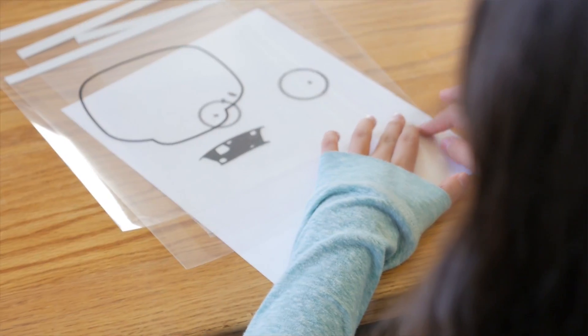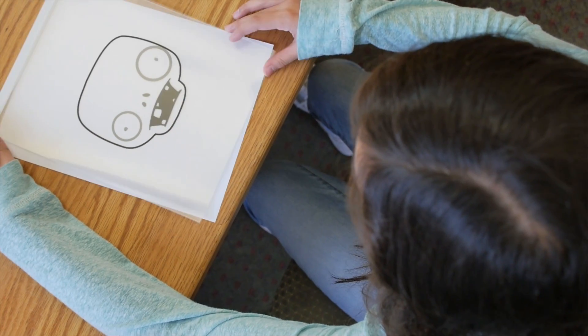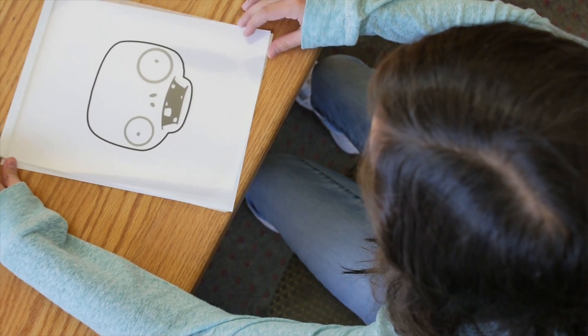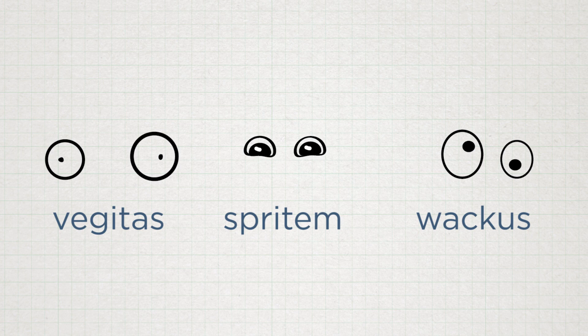First, groups will decompose the task, which means make a game plan. Then they'll look for patterns between all the monsters in the catalog. When they come across differences between the monsters, they'll abstract out — or remove — those details.